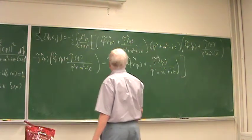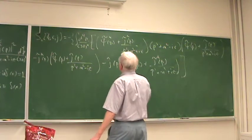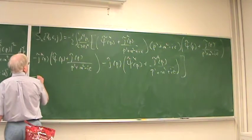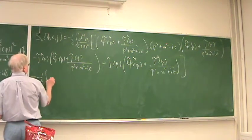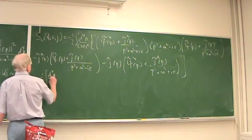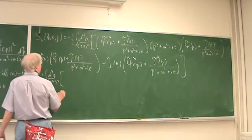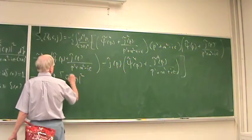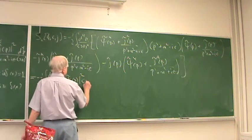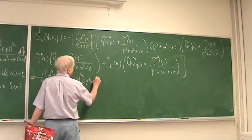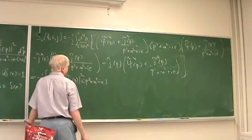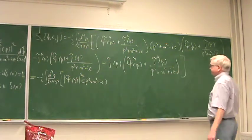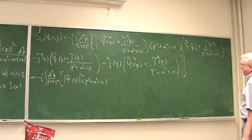The first term is simply minus one-half integral d⁴p/(2π)⁴ of |psi-tilde(p)|² times (p² + m² − iε). Then there are cross terms: plus j-tilde-star/(p² + m² + iε) times (p² + m² − iε) times psi-tilde, plus psi-tilde-star times (p² + m² − iε) times j-tilde/(p² + m² − iε).